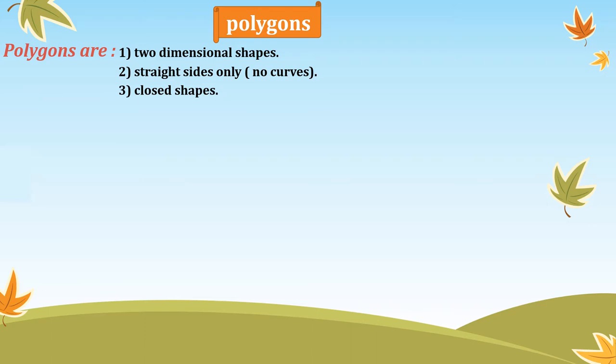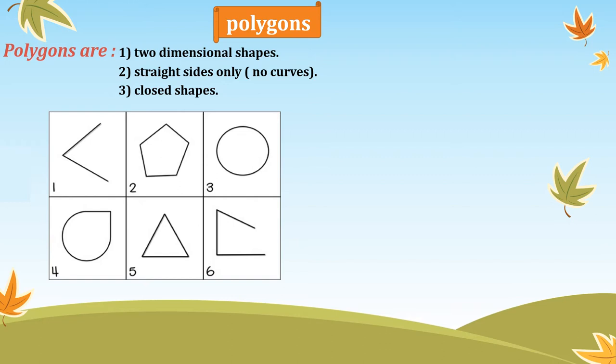We studied 2D shapes in Grade 2. These are shapes that are flat and have no volume — we can't open, catch, or hold them. They're like paper; we can just see them flat. Polygons are 2D shapes with straight sides only — no curves — and they are closed shapes.